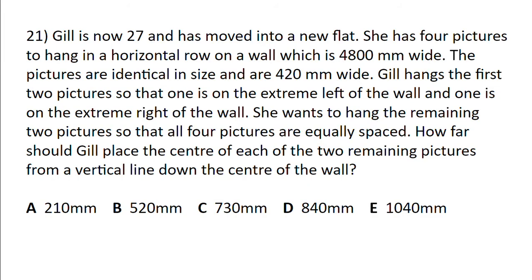Jill is now 27 and has moved into a new flat. She has four pictures to hang in a horizontal row on a wall which is 4800 millimeters wide. The pictures are identical in size and are 420 millimeters wide. Jill hangs the first two pictures so that one is on the extreme left of the wall and one is on the extreme right of the wall.